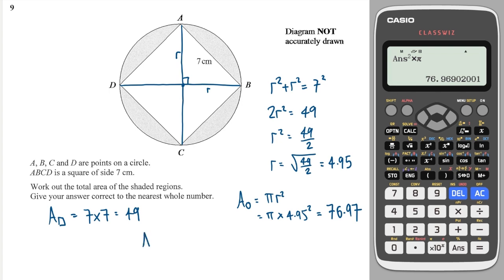So the area of the shaded is equal to the area of the circle, which is 76.97 minus the area of the square. So just take away 49, and we have 27 to the nearest whole number, so it will be 28, and that will be centimeters squared.